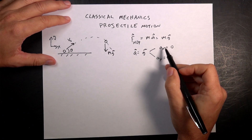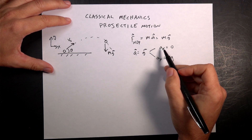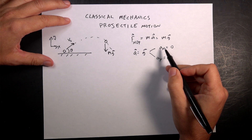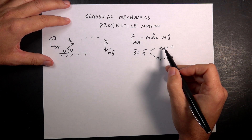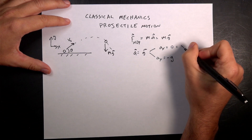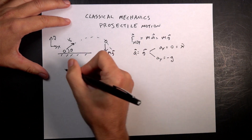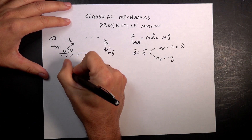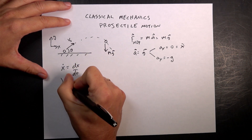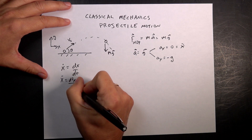Remember that the acceleration is the derivative of the velocity, and the velocity is the derivative of position. So I can write this as x double dot, where x dot is the derivative of x with respect to time, and x double dot is the second derivative of x with respect to time.